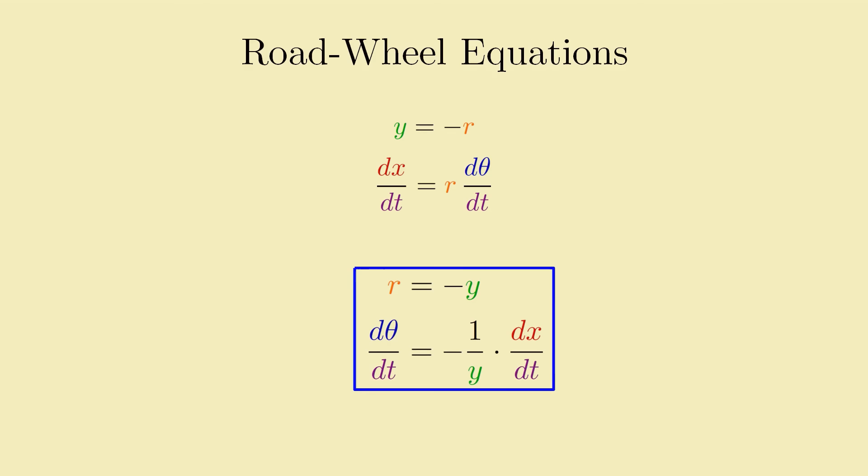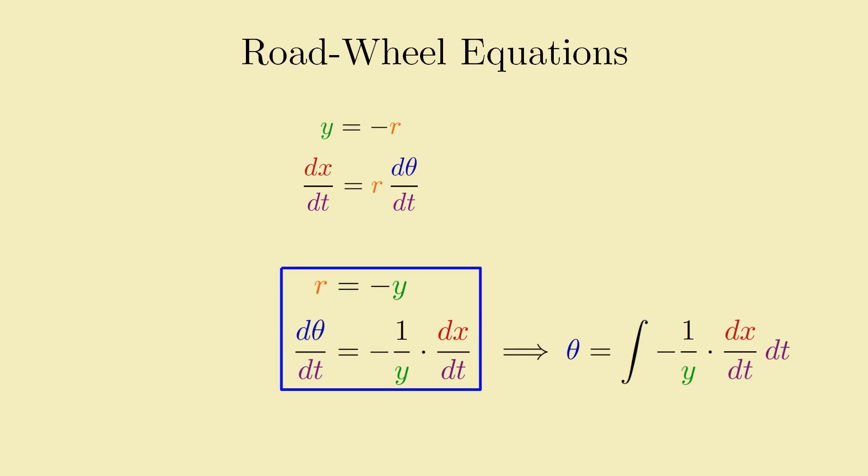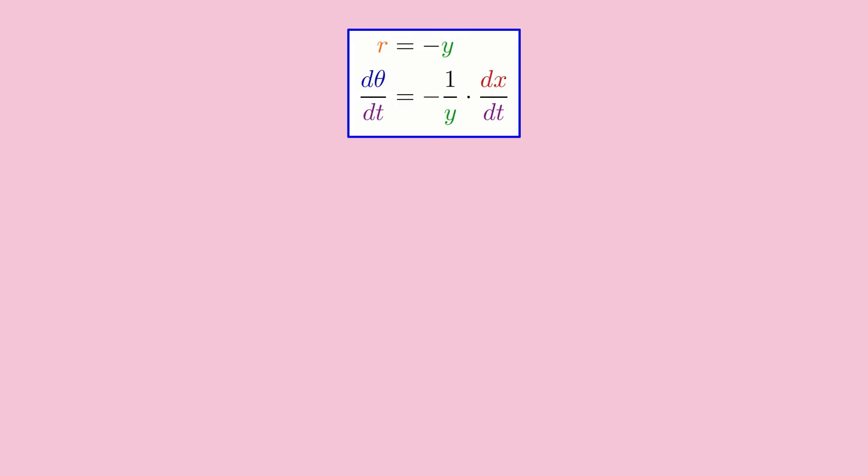And that's kind of it. You can get the r function almost for free by negating whatever the road's y function is, and you can get the theta function by integrating negative 1 over y times the derivative of x, similar to how we previously would get the x function by integrating r times the derivative of theta. So the whole process of finding a wheel from a road looks and feels very similar to doing it the other way around. Pretty cool.